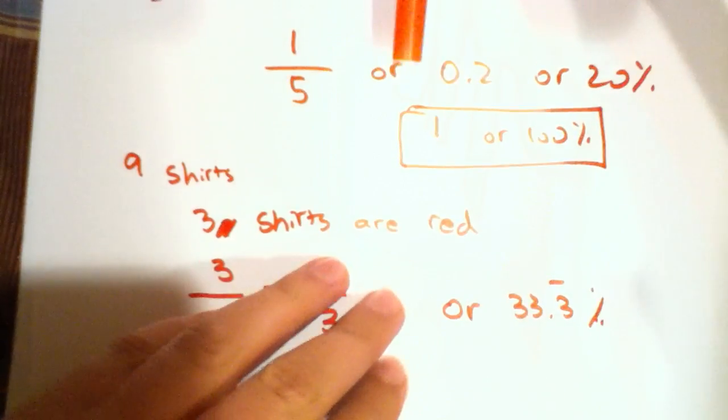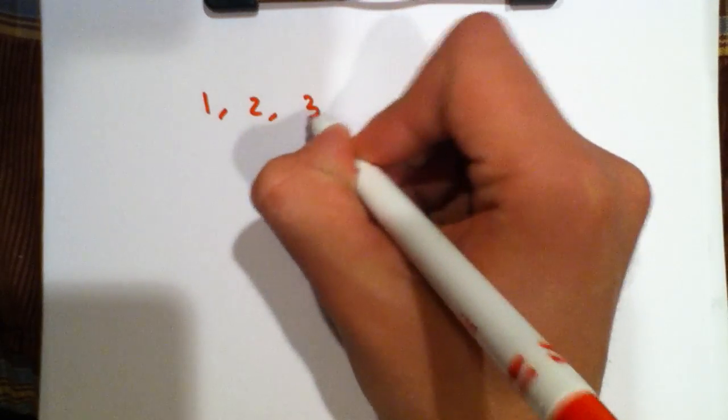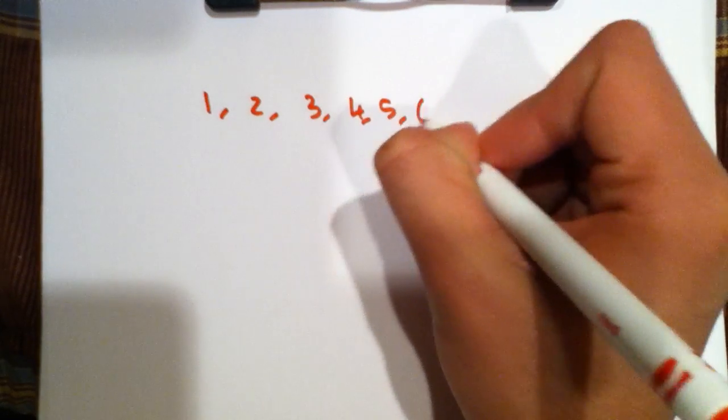Now let's try another example with rolling a 6-sided dice. So if you have a 6-sided dice, what is the probability that you will roll a 4? Now in a 6-sided dice we have a set of numbers going from 1, 2, 3, 4, 5, 6.